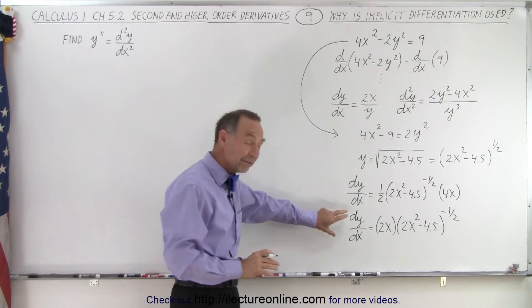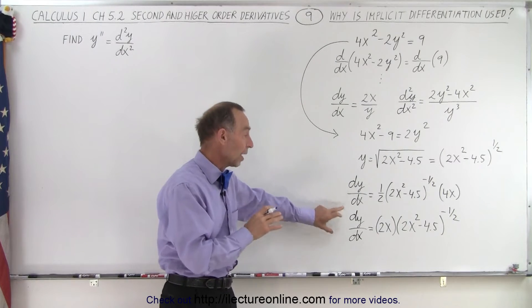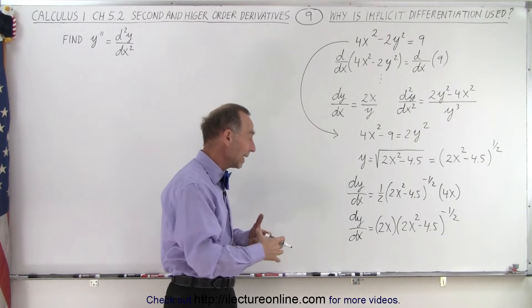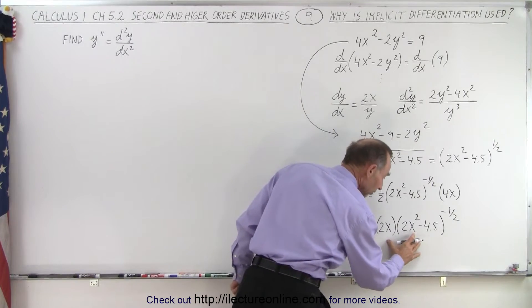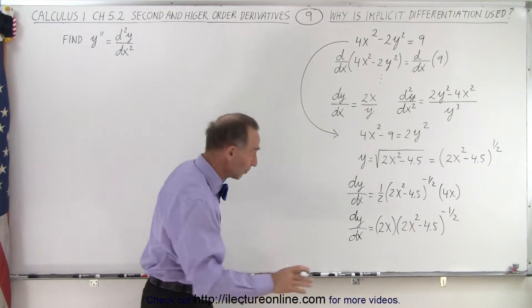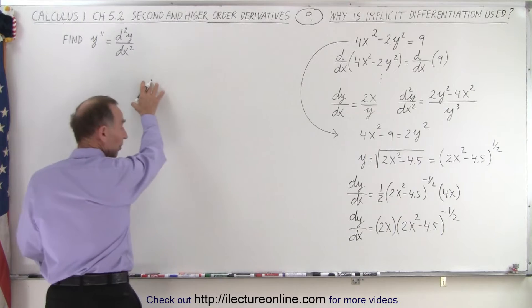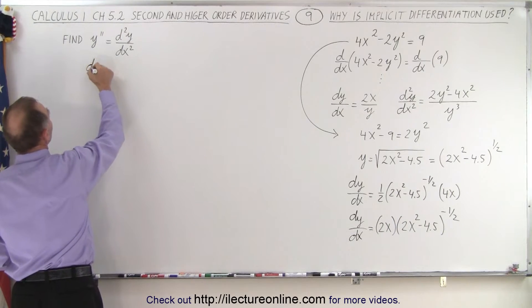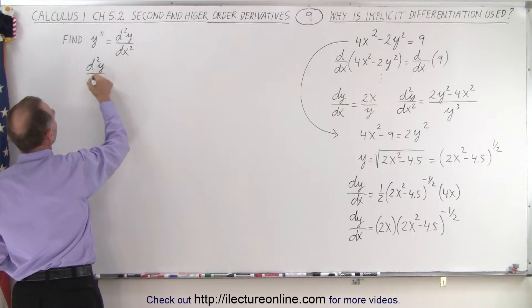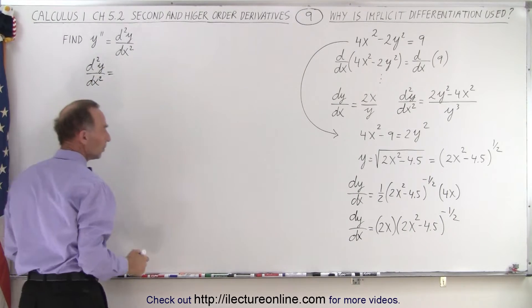So now that we have the first derivative dy/dx, we want to go ahead and take the second derivative. And since we have a product, we have to use the product rule. So let's come up here where we have a little bit more space. Here we write d²y/dx², the second derivative of y with respect to x.